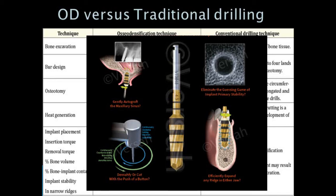Osseodensification can be used for indirect sinus lifting by gently autografting the maxillary sinus. There is no compromise regarding primary and secondary stability — both will be enhanced. It can also be used to efficiently expand any ridge in either jaw, and it can be used in low-density bone. All this happens with the push of a button: clockwise to cut the bone, counter-clockwise to densify it. Osseodensification uses universally compatible drills and creates a precise circumferential osteotomy, and can be applied for bone densification, indirect sinus lift, and bone expansion at different sites of varying bone densities.